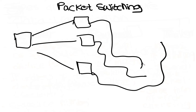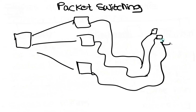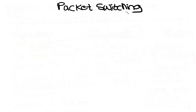At each stage in the transmission there are nodes that contain a router. Each router will determine which route the packet needs to take in order to reach its destination. The destination IP address is used in this part of the process.